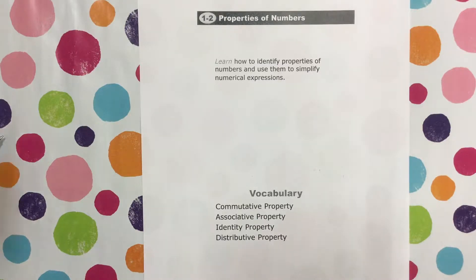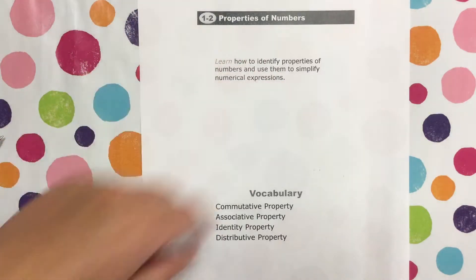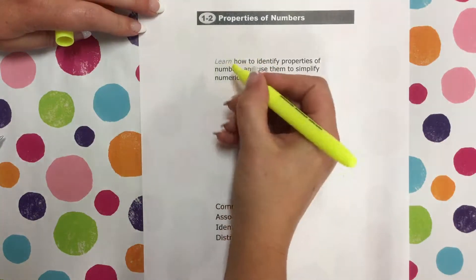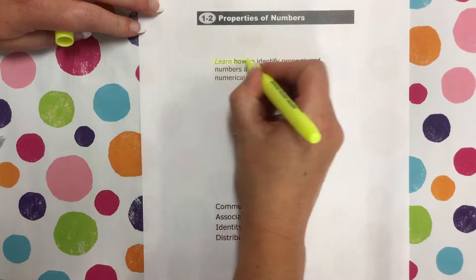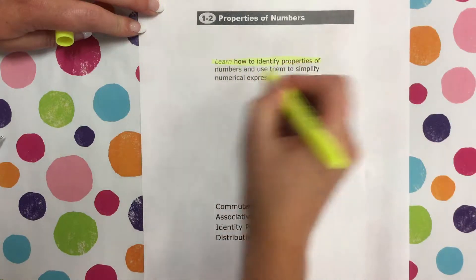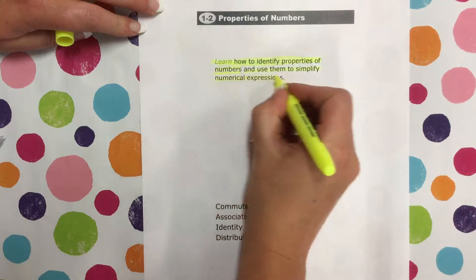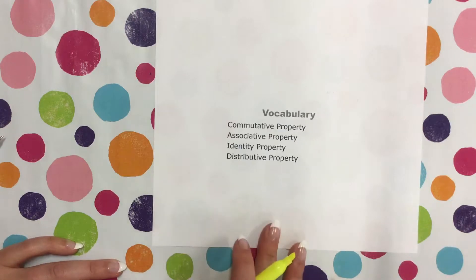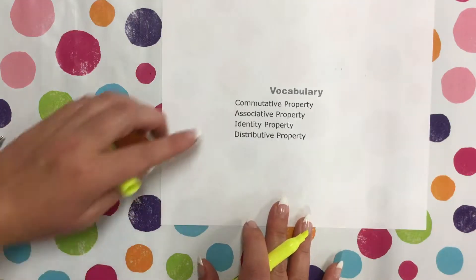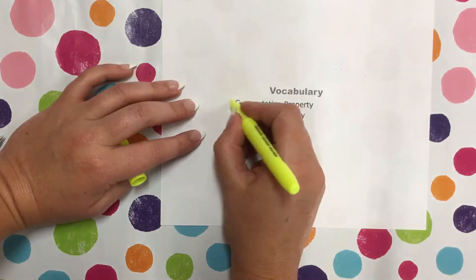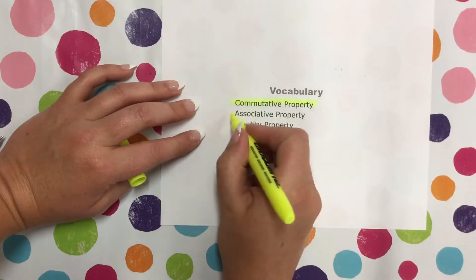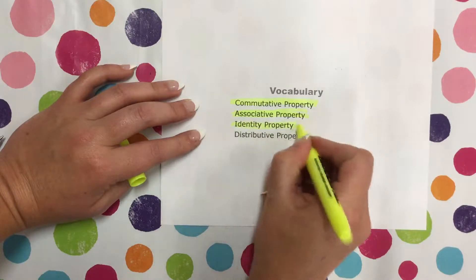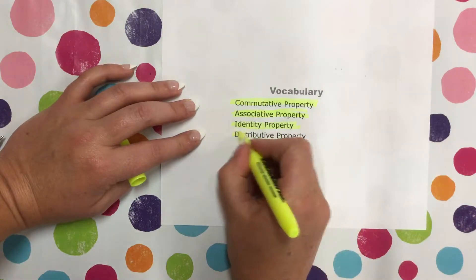Hello, everyone. Today we are in Chapter 1, Lesson 2, Properties of Numbers. Our objective for the day is to learn how to identify properties of numbers and then use them to simplify numerical expressions. Some of the properties we're going to be discussing are the commutative property, the associative property, the identity property, and lastly, the distributive property.